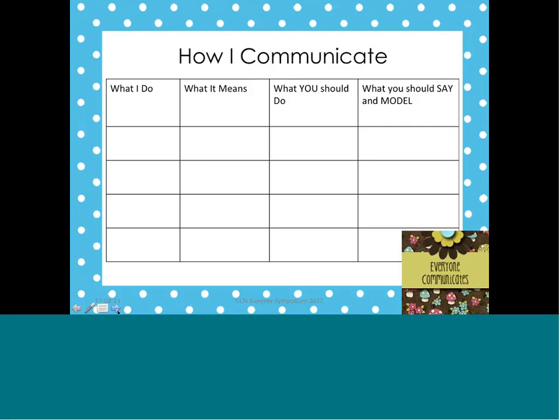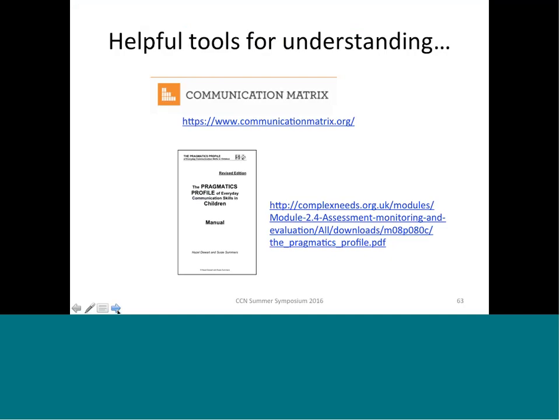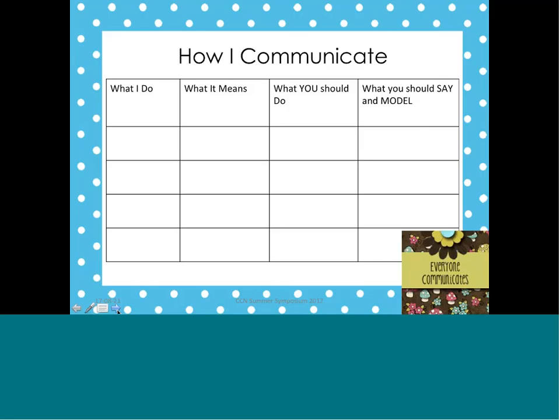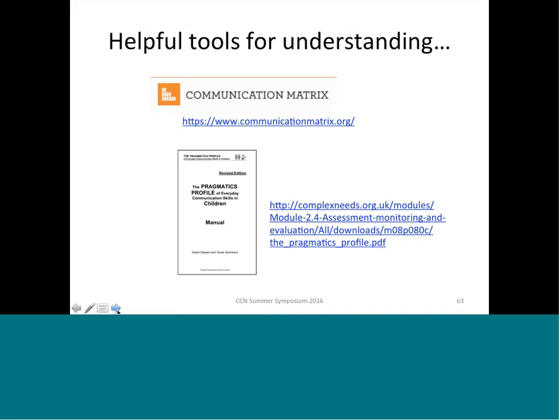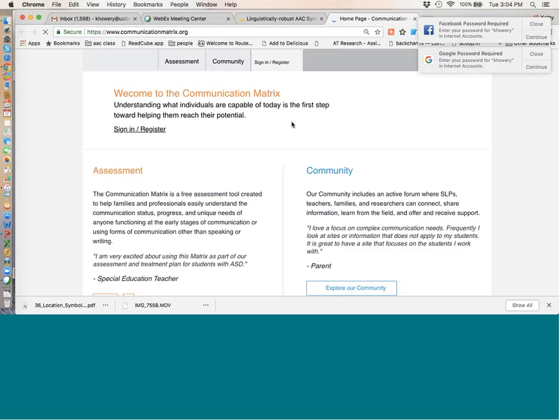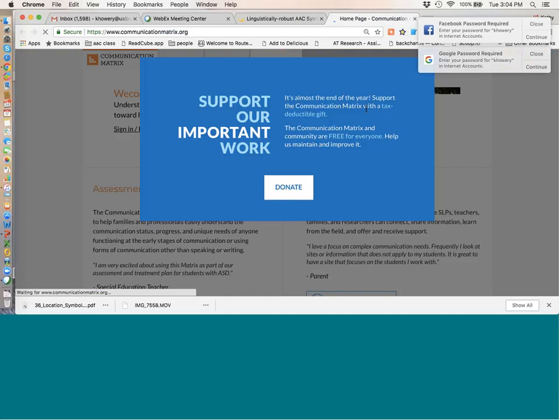Ways to gather that information about what a child does and what it means: use the Communication Matrix. I hope many of you are familiar with it — it's a way to gather information about how a child currently communicates. You can use that information to fill in the chart I described. I'm encouraging people to use it as a way of monitoring growth — if you do a Communication Matrix at the beginning of the year and again at the end, you have repeated measures to think about growth.